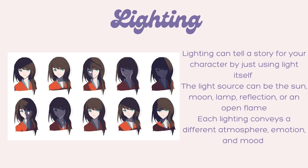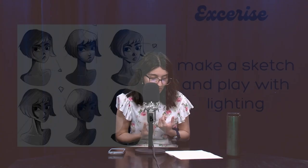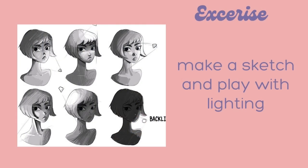Now let's talk about the importance of lighting. Lighting can tell a story for your character by just using light itself, depending on their emotion or atmosphere. The light source can be the sun, moon, lamp, reflection, or an open flame. For another exercise, I want you to study the light on your figure. Play around with the spotlight of your light source and the shadows that are making over the figure. Take your time with this — it gets better the more you practice.